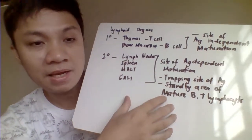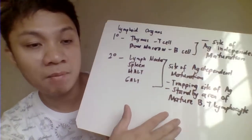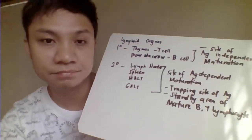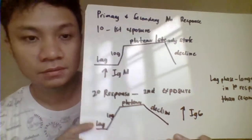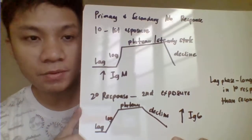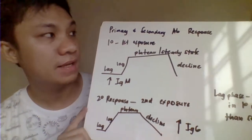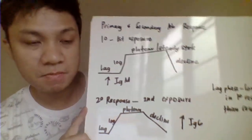Secondary lymphoid organs are the trapping site of antigens — the meeting site of antigens with mature B lymphocytes — and therefore this is the site of antigen-dependent maturation. T and B lymphocytes proliferate and become immunocompetent as they meet with antigen here. In the primary lymphoid organ they do not meet antigen; they mature here by meeting up with your antigen.